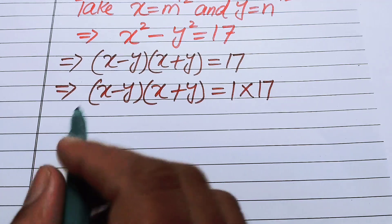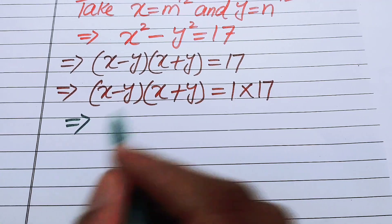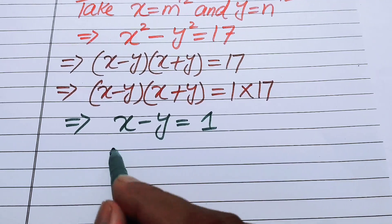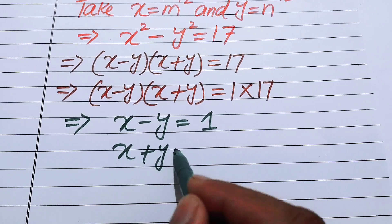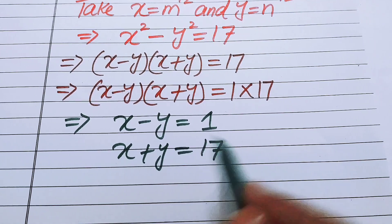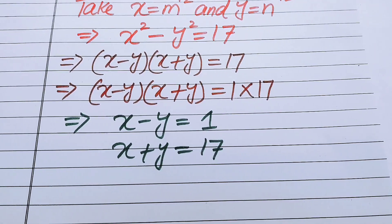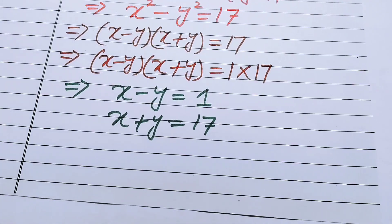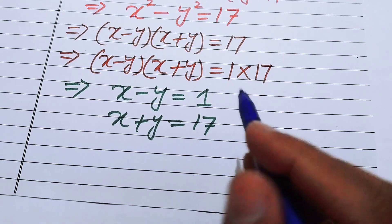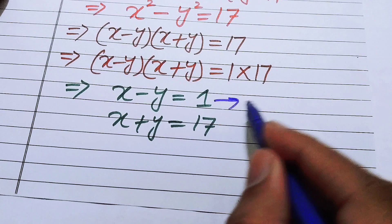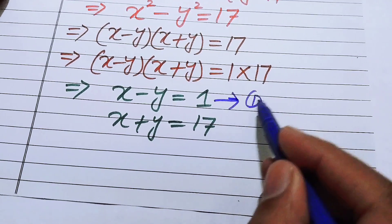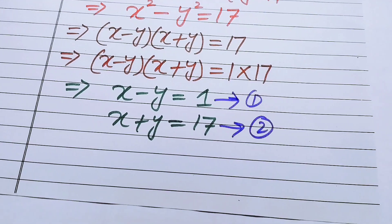Since both sides have two factors, we compare them and get: x minus y equals 1 (equation 1) and x plus y equals 17 (equation 2). We will now solve these two equations to find the values of x and y.